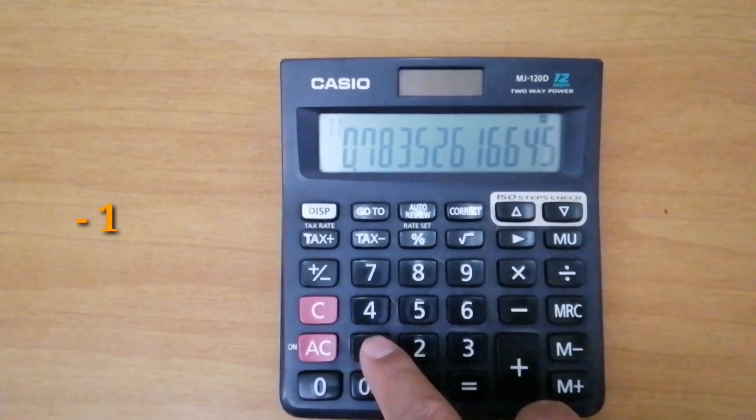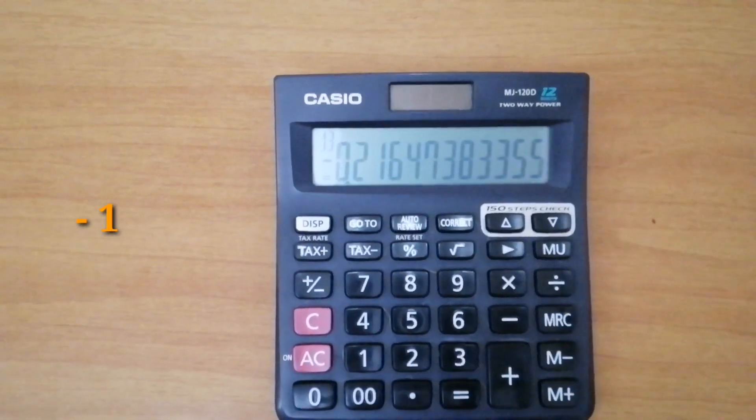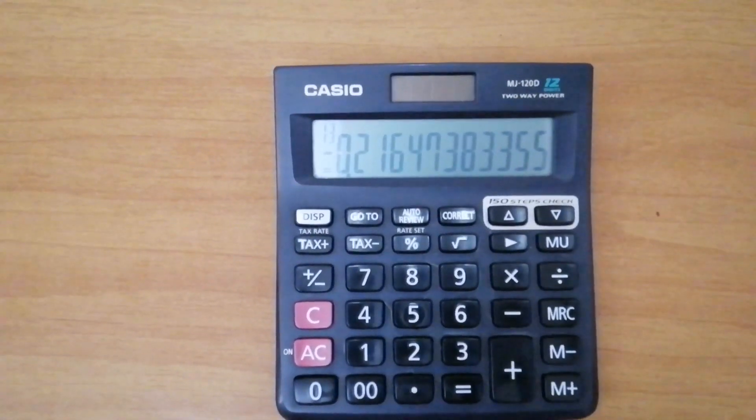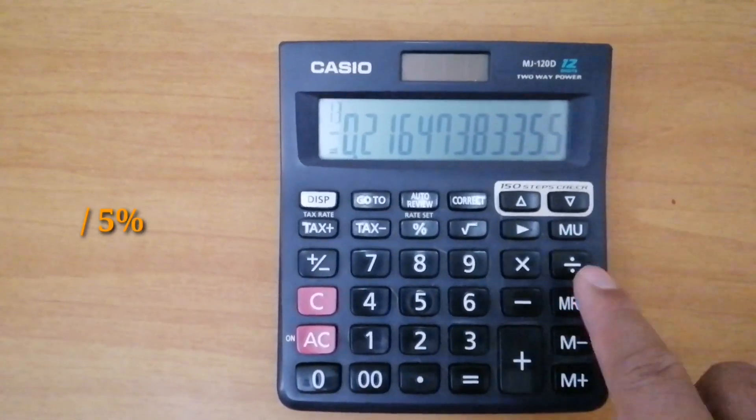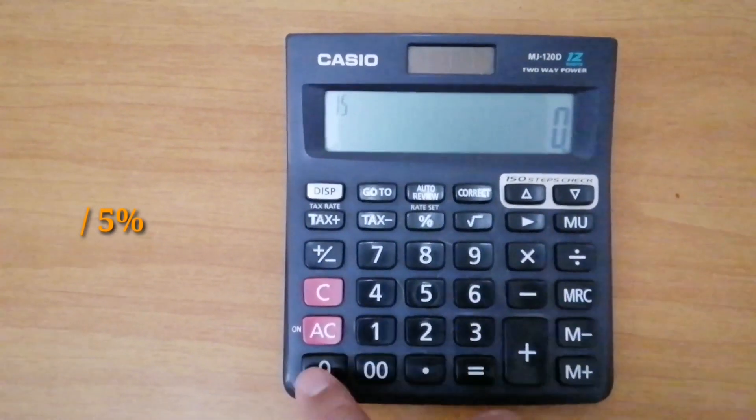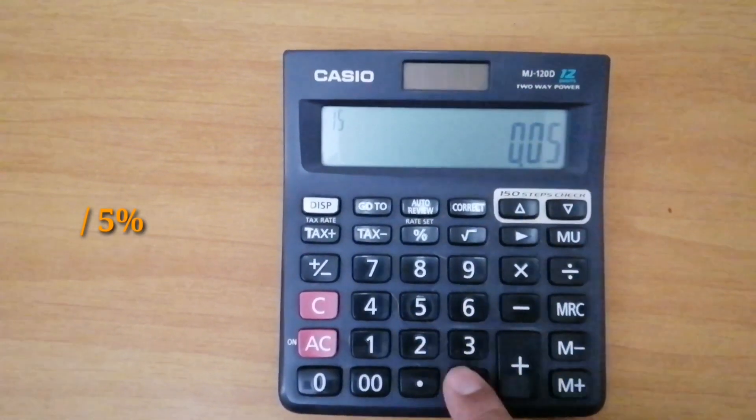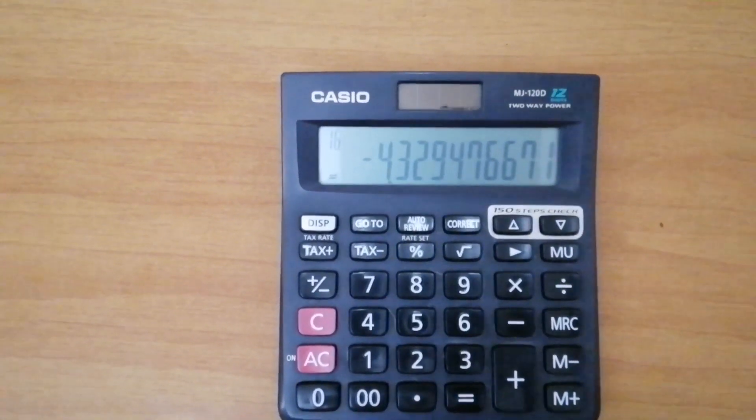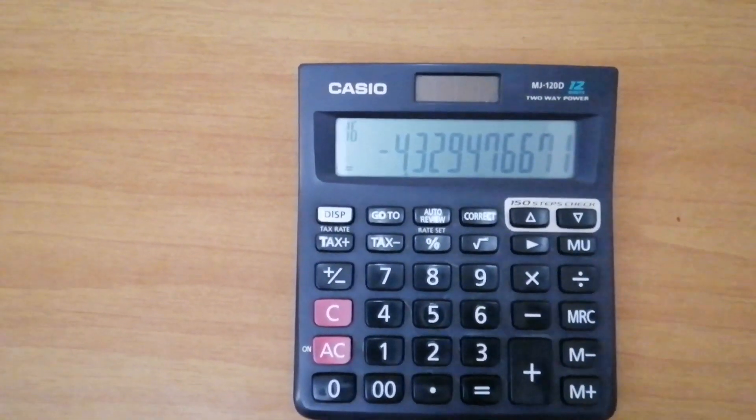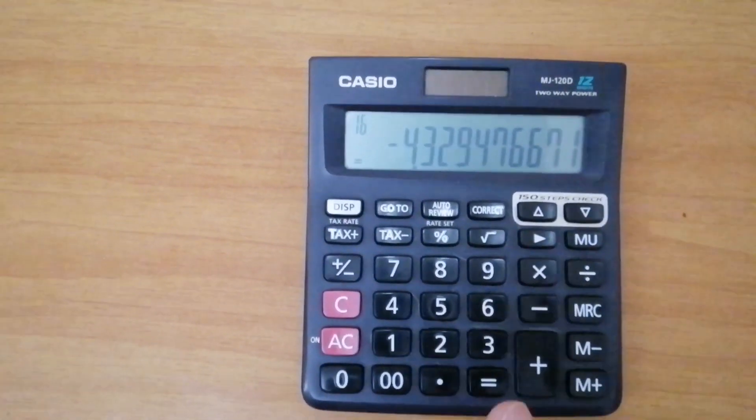Now, minus 1, then divide by the rate. The rate is 5%. So that is 4.329.